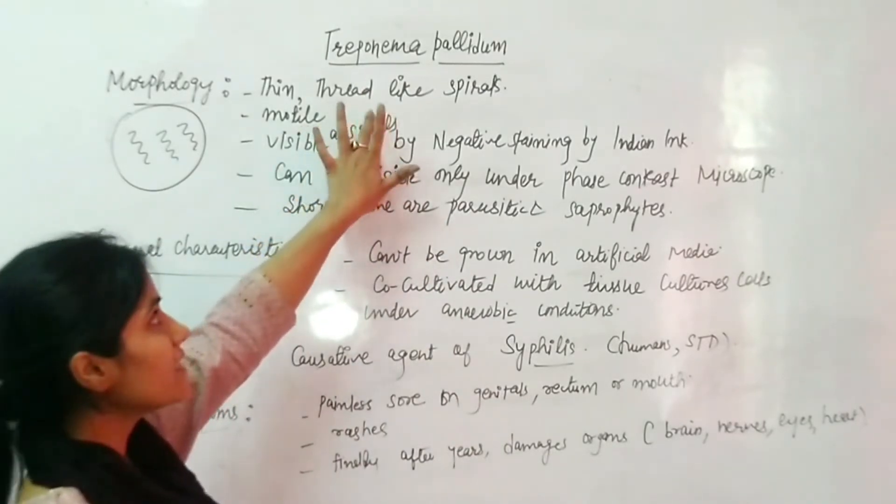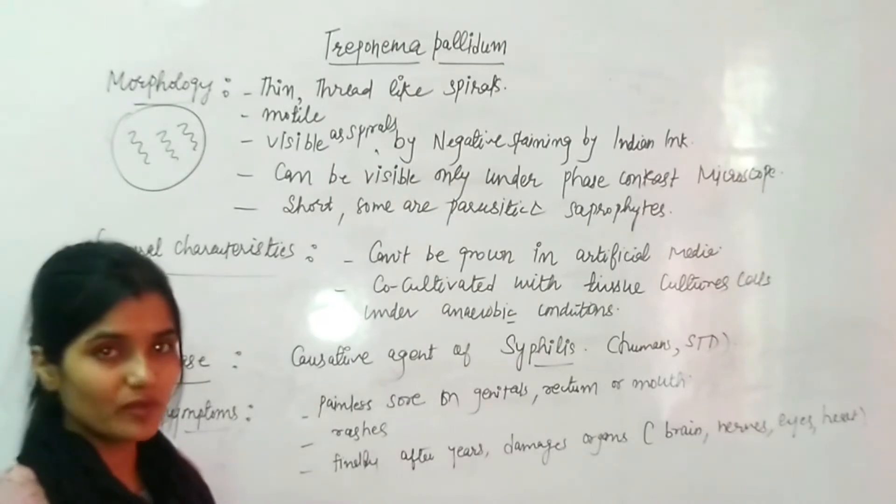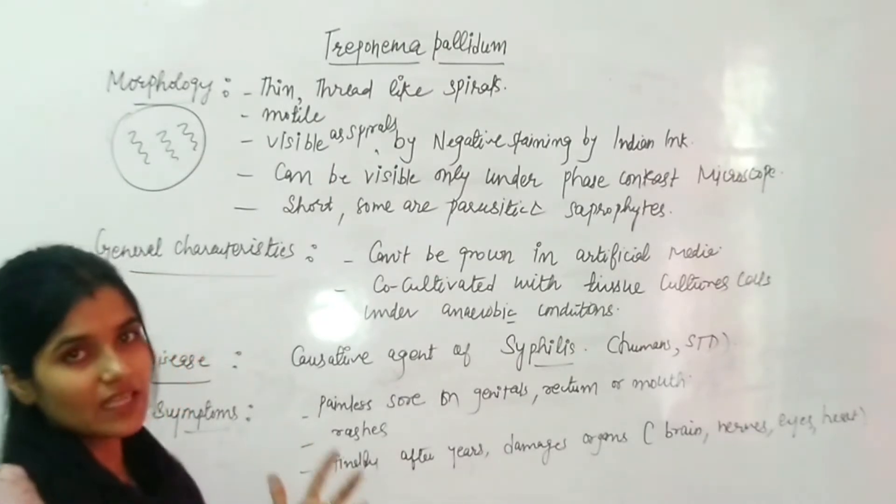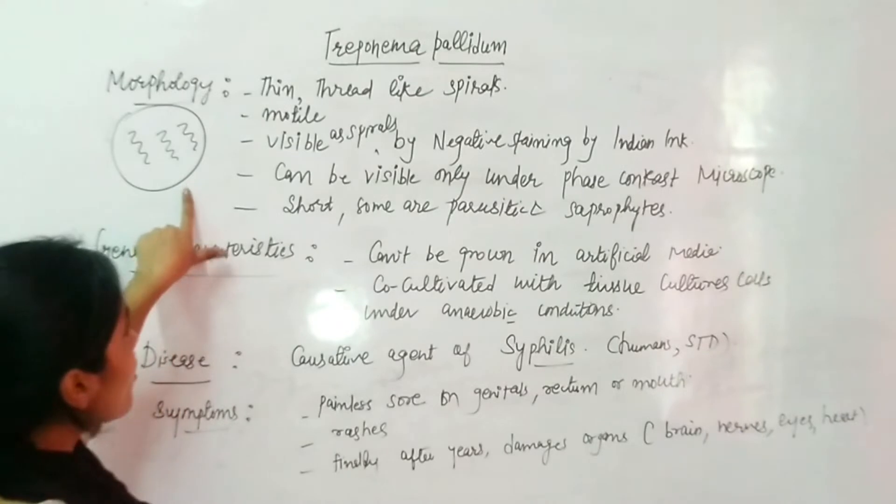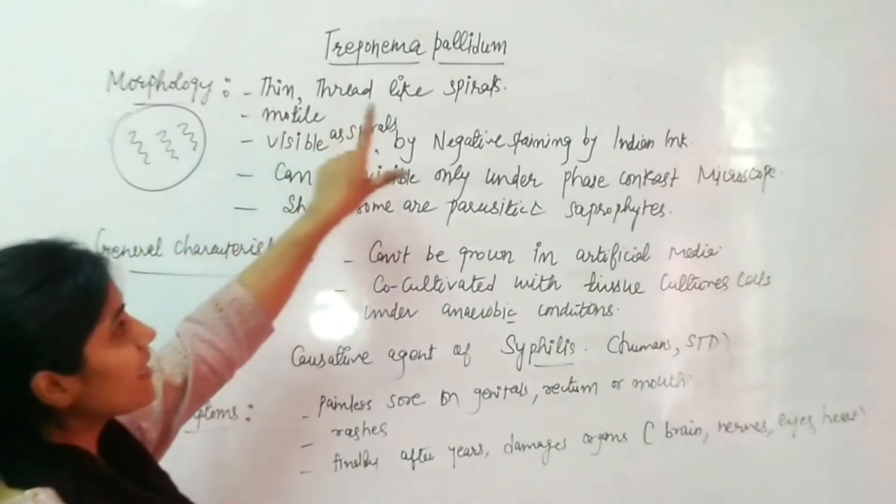It is the bacteria that causes sexually transmitted disease in human beings called syphilis. This bacteria according to its morphology is motile and appears like thin threads, like spirals.